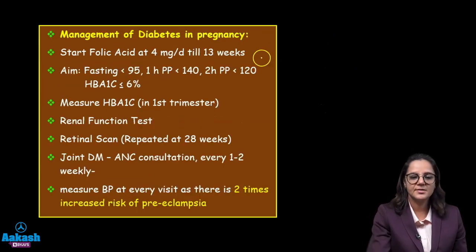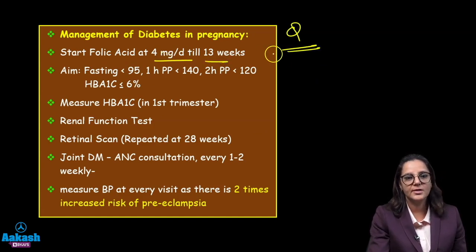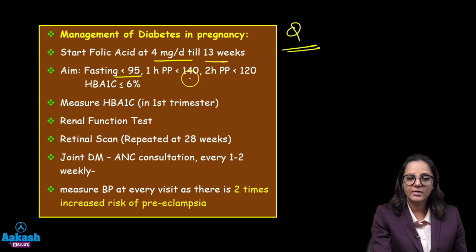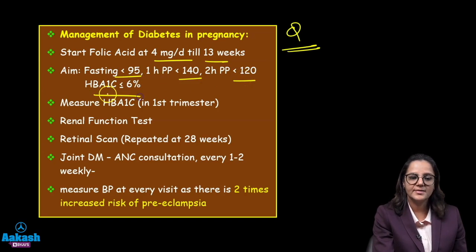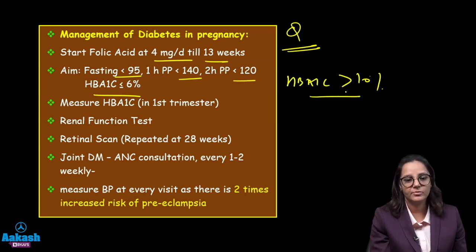How do you manage diabetes in pregnancy? Start folic acid 4 mg till 13 weeks — it is not 4 microgram, it is 4 mg till 13 weeks. Aim for fasting blood sugar less than 95, one-hour postprandial less than 140, two-hour less than 120. HbA1c is kept at less than 6%. If HbA1c is more than 10%, there is very high risk of congenital malformations.